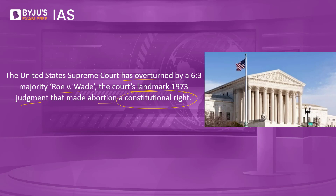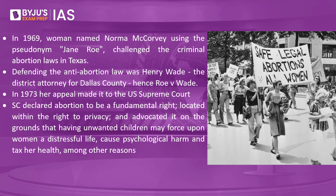First, we need to understand what Roe versus Wade is all about. Going back to 1969, a woman named Norma McCorvey, using the pseudonym Jane Roe, challenged the criminal abortion laws in Texas. Back then, Texas law did not allow women to abort the fetus — it allowed abortion only when the mother's life was in danger. She felt this law violated the right to privacy already guaranteed in the US Constitution, and so she filed a case. Defending the anti-abortion law was Henry Wade, the district attorney for Dallas County, and hence this case became Roe versus Wade.